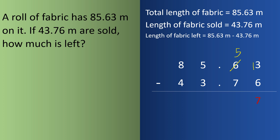Since 5 is less than 7, we take a borrow — the ones digit becomes 4 and the tenths become 15. So 15 minus 7 equals 8. There is a decimal point here. Then 4 minus 3 equals 1, and 8 minus 4 equals 4. So 41.87 m of fabric is left.